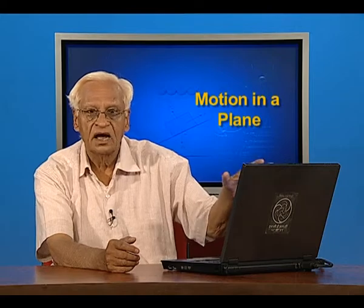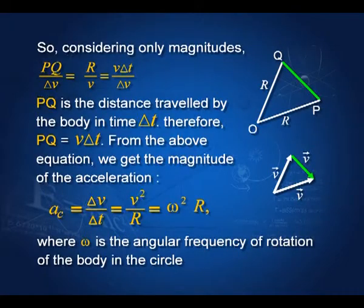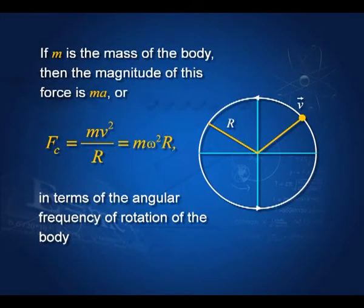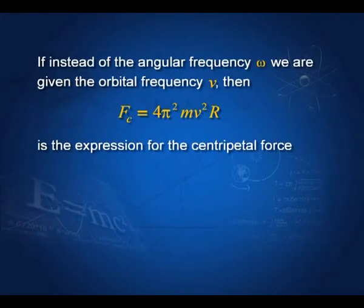If there is acceleration, there must be a force. The centripetal acceleration is directed towards the center of the circle, and therefore the force is also along the line joining the object with the center. If m is the mass of the object, the centripetal force is mv²/r. In terms of angular frequency, it is mω²r, and in terms of frequency ν, it is 4π²mν²r, where ν is the frequency of the circular orbit.